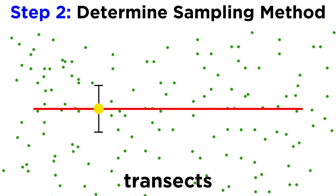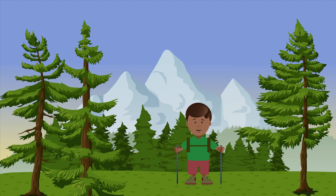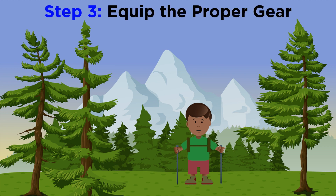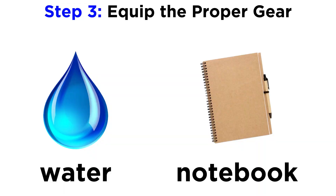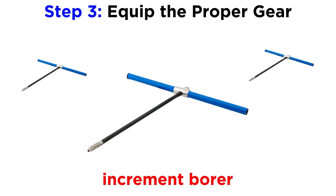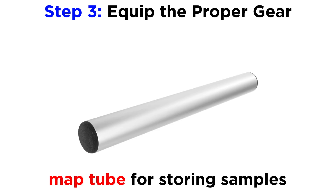The researcher samples every tree within one meter while moving along the rope. After a site and sampling method has been selected, but before anyone goes into the field, the researcher will need the proper gear. Along with sufficient water and a small waterproof notebook for field notes, a dendrochronologist usually carries an increment borer and a duplicate or two, just in case something goes wrong — since in the field, something always does.